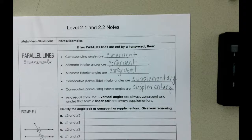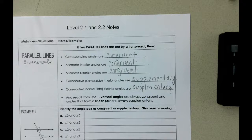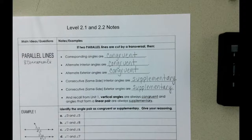And then we can't forget words from unit 1. Vertical angles are always congruent. And angles that form a linear pair are always supplementary.